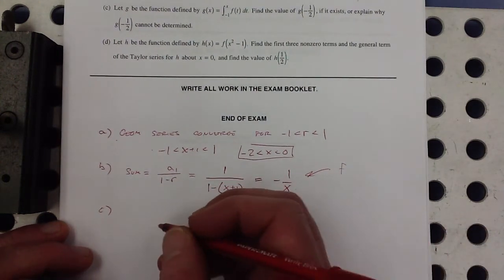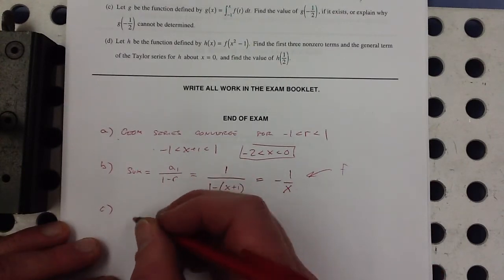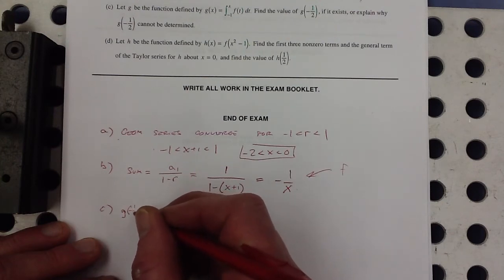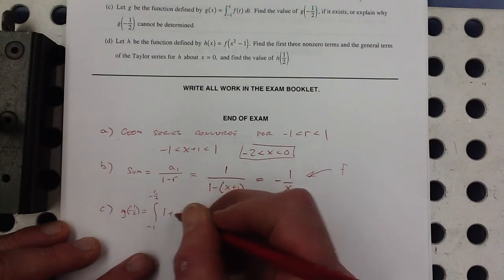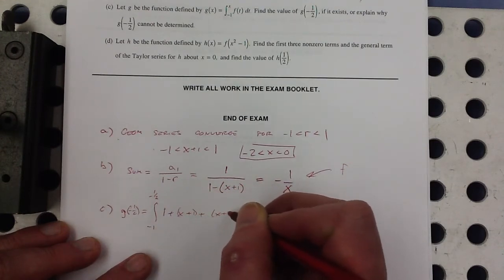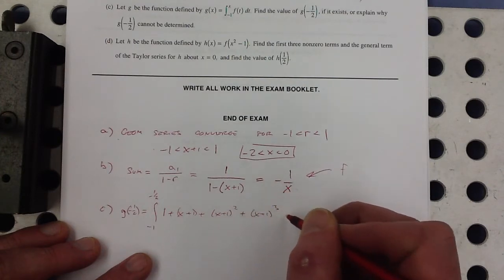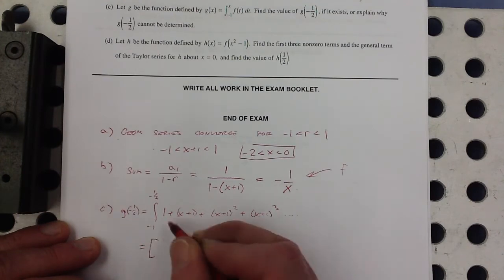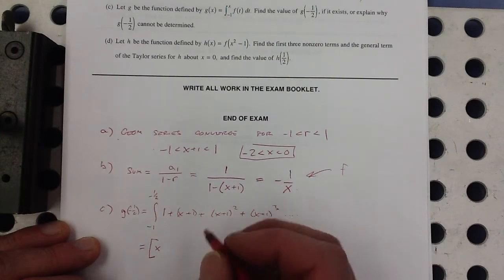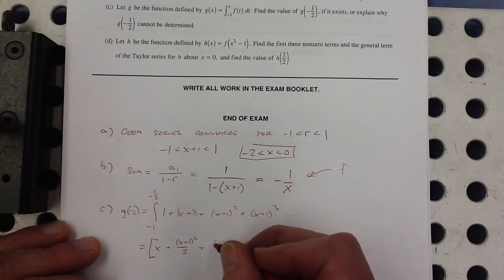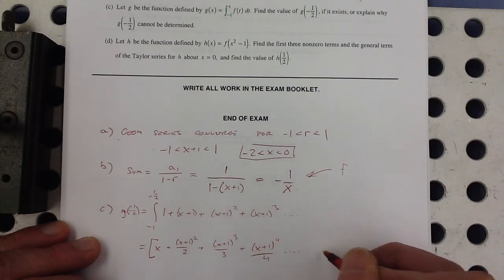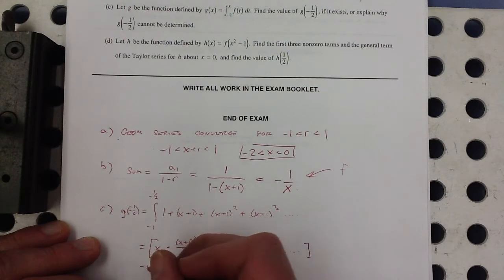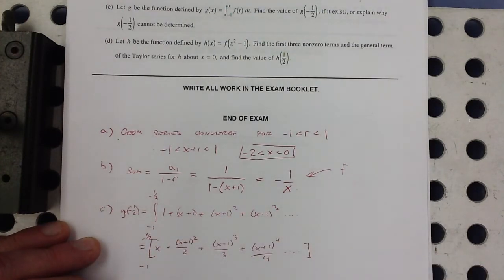Let's try it that way and see how that goes. So if you were going to go that way, you'd say, okay, I know that g of negative 1 half is equal to the integral from negative 1 to negative 1 half for this series. That's 1 plus x plus 1 plus x plus 1 squared plus x plus 1 cubed, etc. And then so we'd take the antiderivative. Antiderivative of that is x, antiderivative of this is x plus 1 squared over 2 plus x plus 1 cubed over 3 plus x plus 1 to the 4th over 4 and so on from negative 1 to negative 1 half.